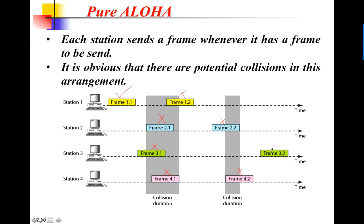In the last example, frame 3.2 is transmitted with no one else sending at that time, so it is transmitted successfully. In total we have 8 frames, out of which only 2 have been successfully transmitted. All other frames have been lost and will need to be resent.